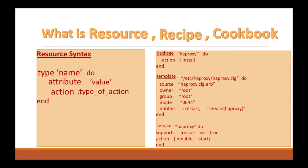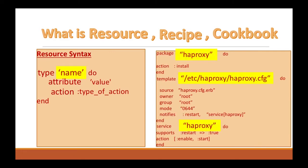In this slide, we have three different resource types: a package, a template, and a service. Each resource will have a name. In our package resource, the name of the package is HAProxy. This is the name of the template resource: /etc/haproxy/haproxy.cfg. And this is the name of the service resource.